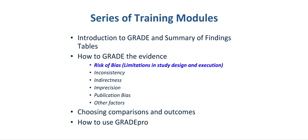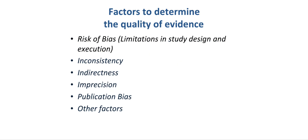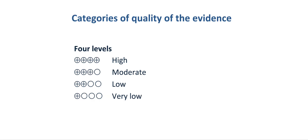This particular module is about the risk of bias or limitations in study design and execution. The factors that determine the quality of evidence determine the four categories of a body of evidence, categorized into 4+, 3+, 2+, 1+ — or high, moderate, low, and very low quality evidence.